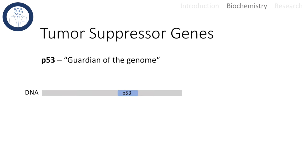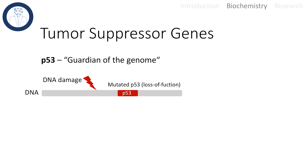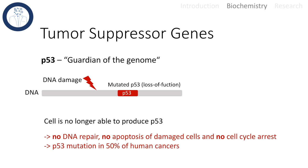We have an example for tumor suppressor genes as well. Let me introduce p53, a protein that is called the guardian of the genome. If the DNA is damaged, the p53 gene is transcribed and translated into proteins that help DNA repair, or if that fails, it tells the cell to undergo apoptosis. If this gene is mutated and loses its function, we don't have a protein product anymore, so the cell is no longer able to repair DNA mistakes or undergo apoptosis. With this mutation, the somatic cell will divide since there is no cell cycle arrest anymore. p53 mutations are involved in 50% of human cancers.